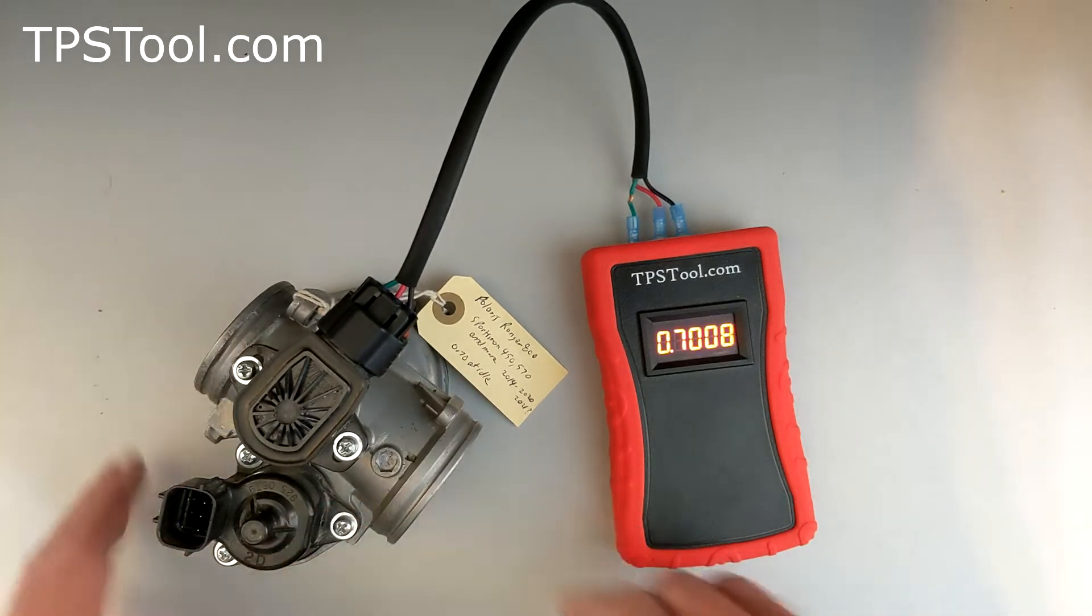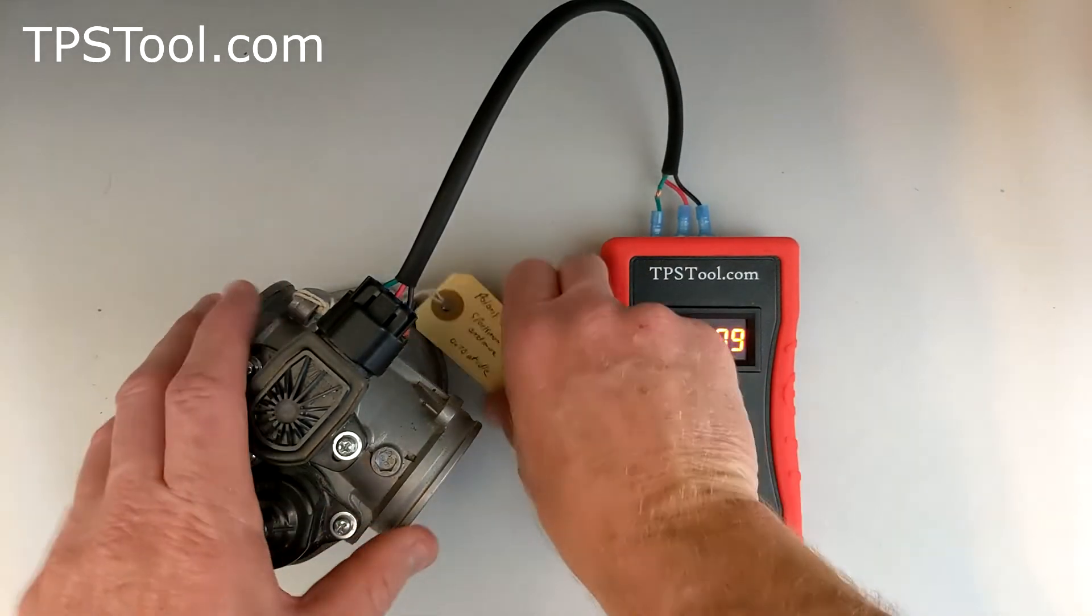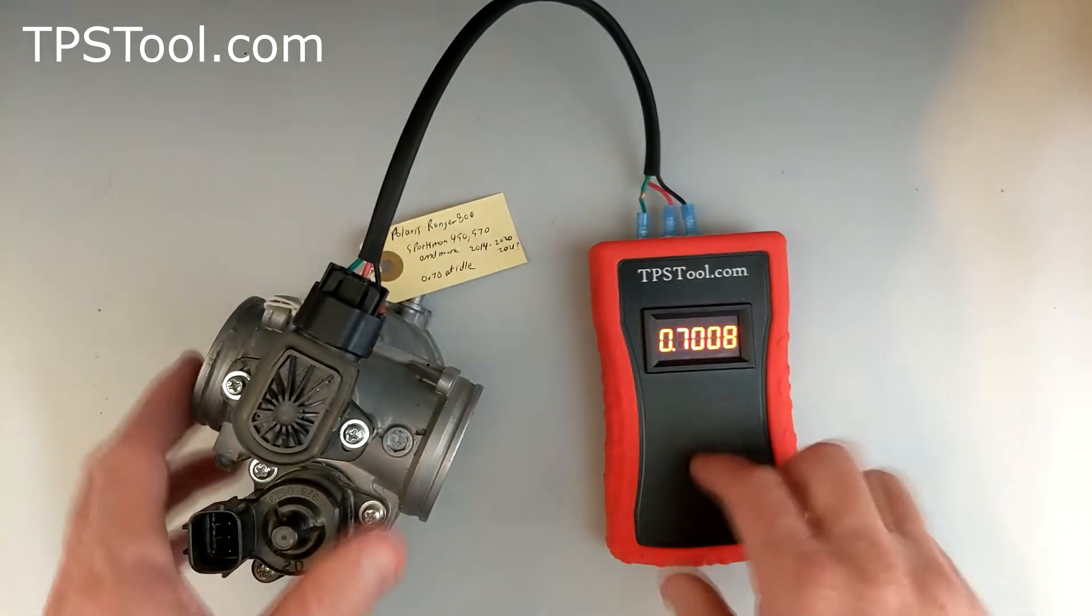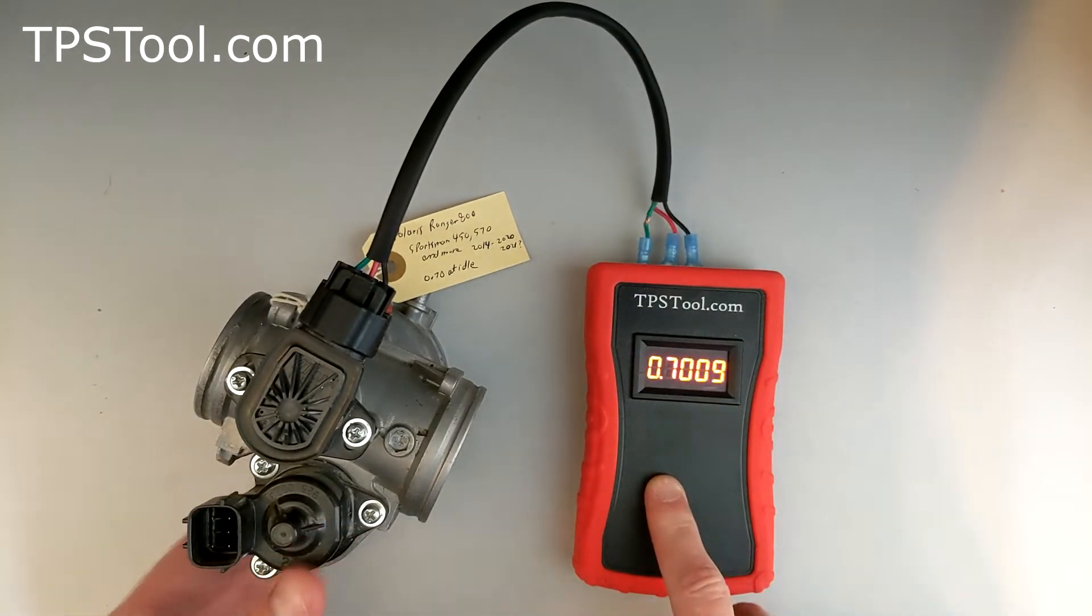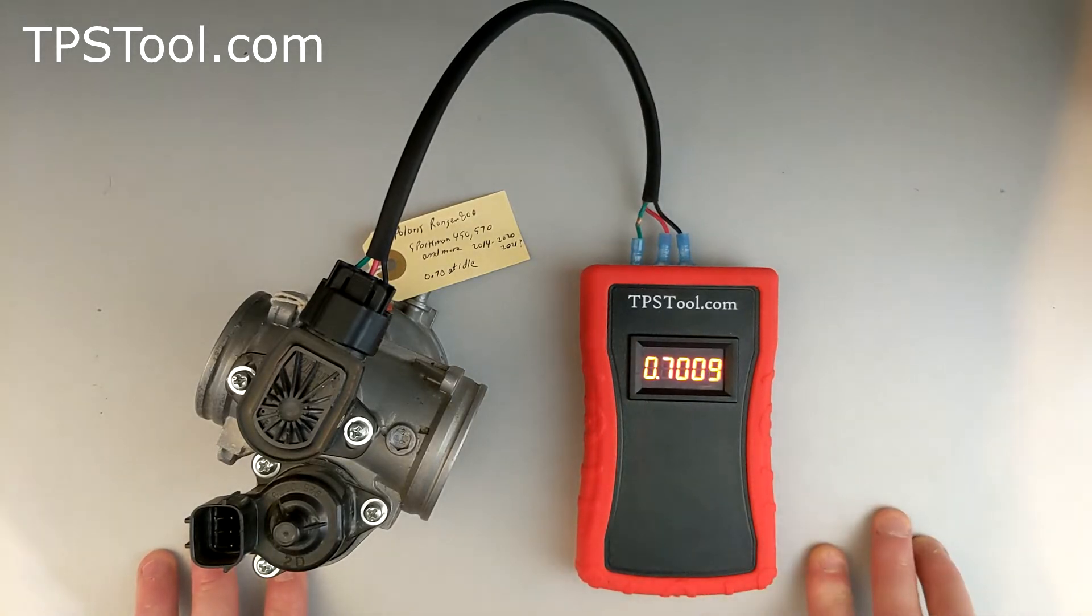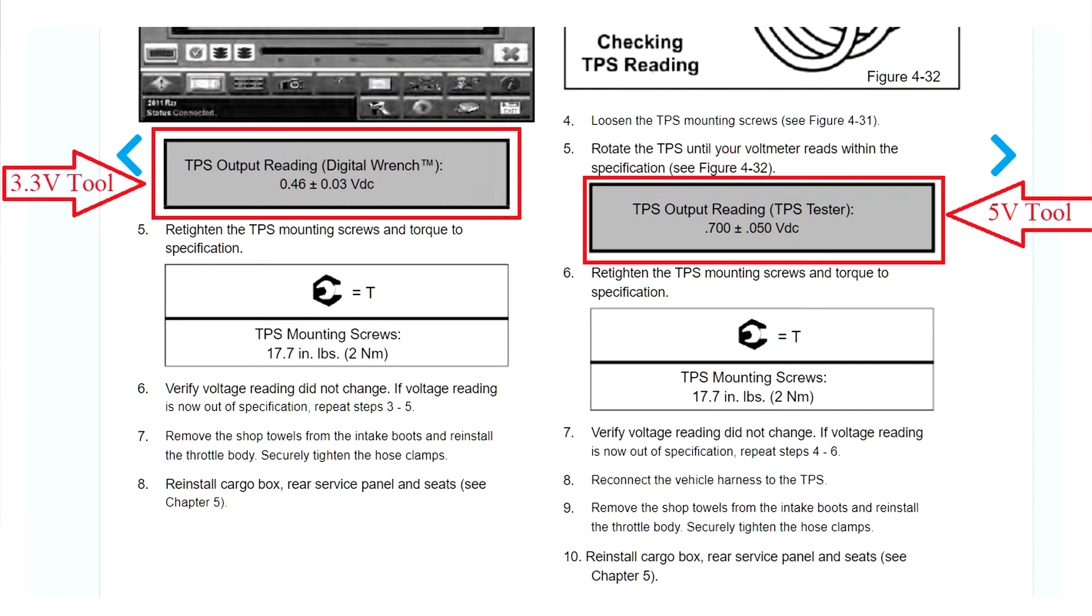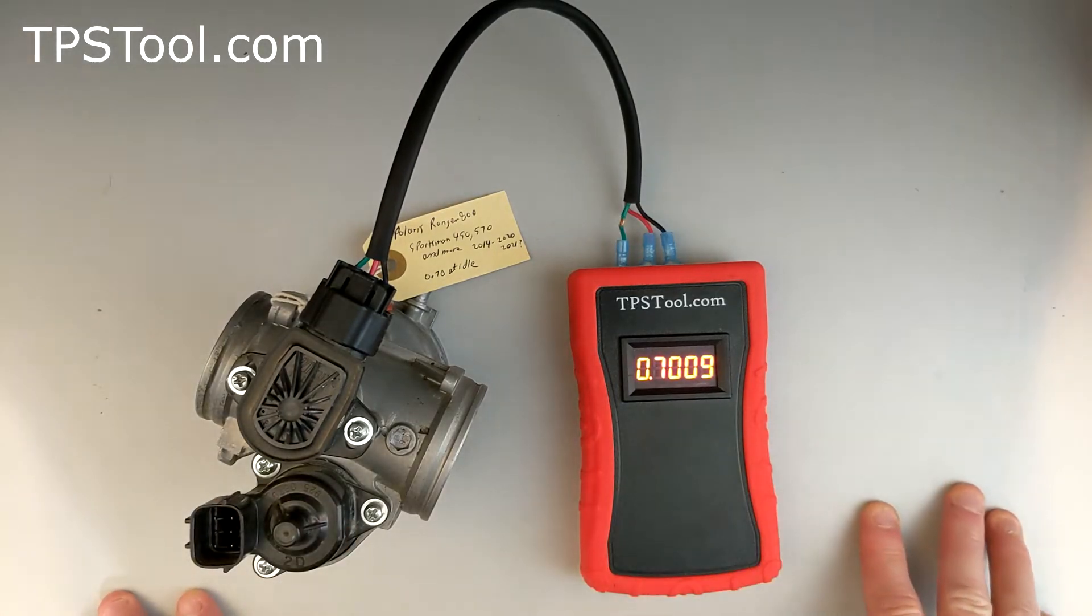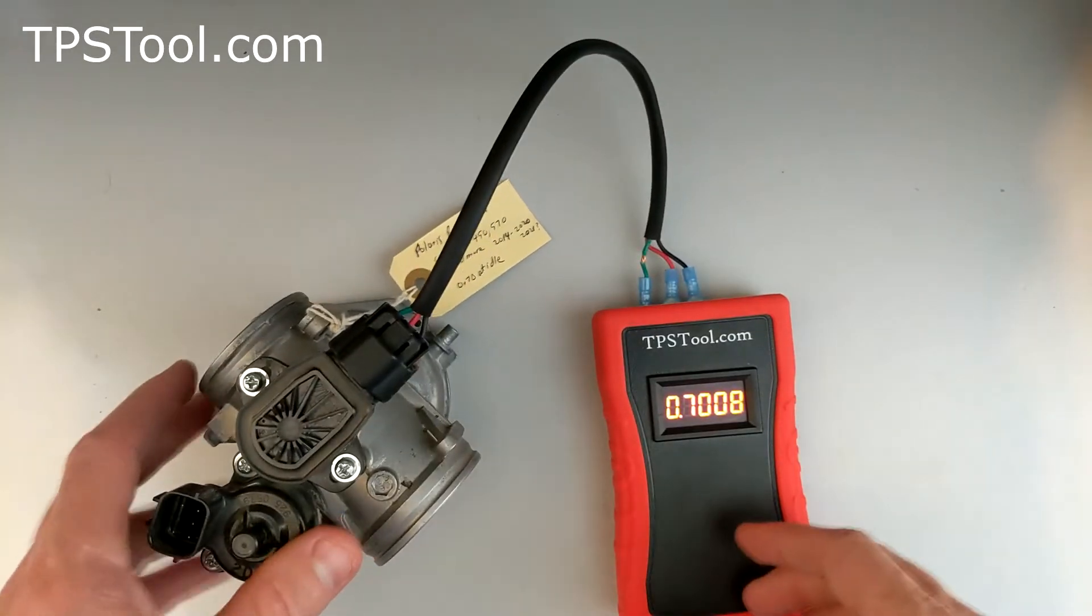So what is the proper value to set it to, 0.7 or 0.46? This is a throttle body off a Polaris Ranger 800. This one is listed at 0.7 at idle, and that is when you're using a 5-volt tool, such as the TPSTool.com Pro Powered Meter. If you're using a 3.3-volt tool, such as the Polaris Digital Wrench, then in that case the proper value would be 0.46. You're putting less voltage in, so you're going to get less out. So again, with a 5-volt tool, the value is 0.70. With a 3.3-volt tool, the value is 0.46. Let me show you that's the case.